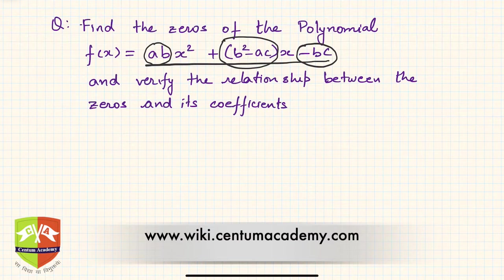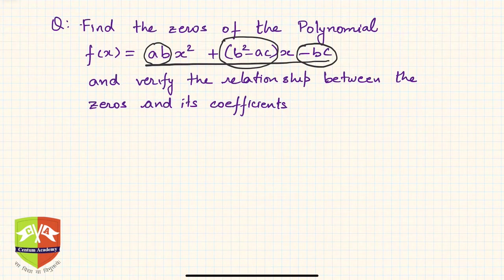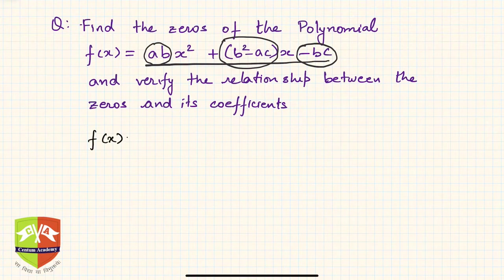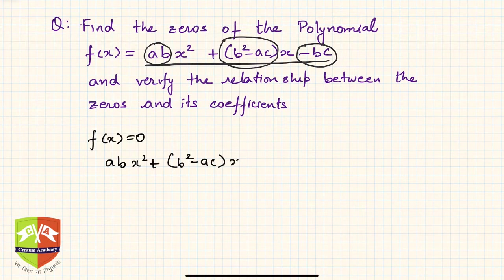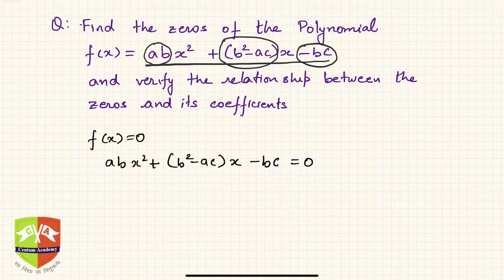To find the zeros, we find those values of x which make f(x) equal to zero. So we set f(x) = 0 and write: abx² + (b² - ac)x - bc = 0.